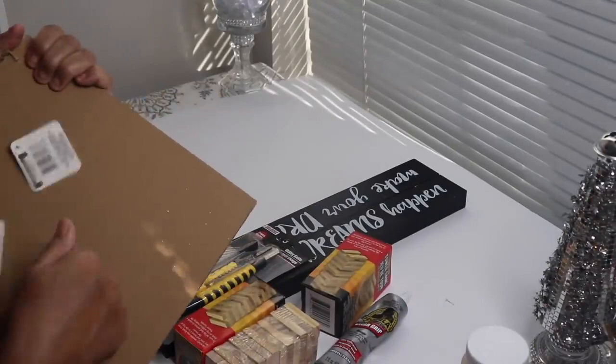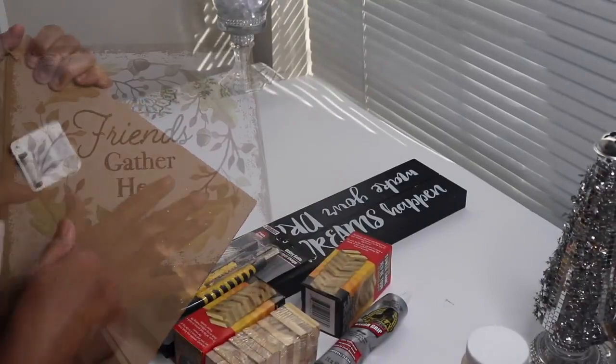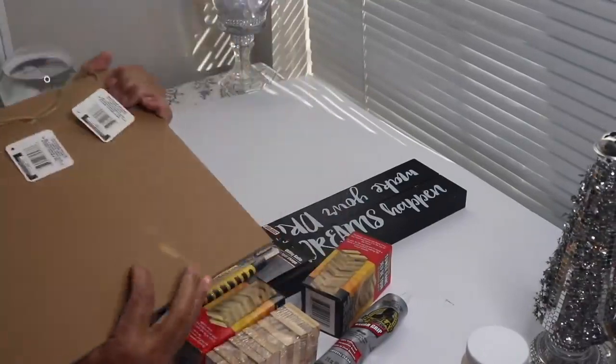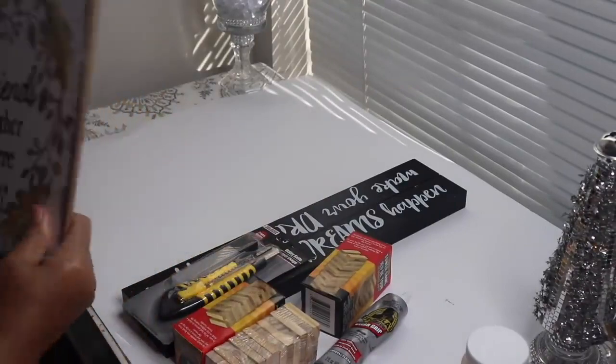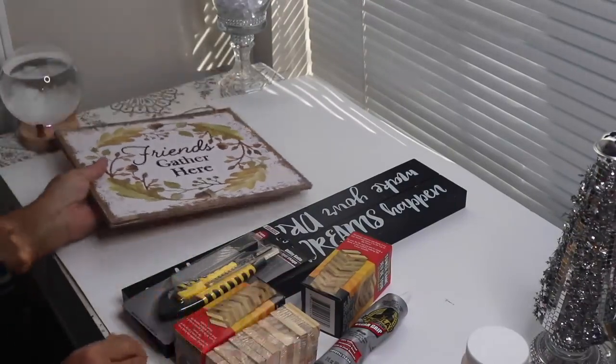Again, the look of this tray will be different. I'll be using two of these signs from Dollar Tree. I'm sure that you'll find these with different sayings on them, and I'll have the measurements in the description below.